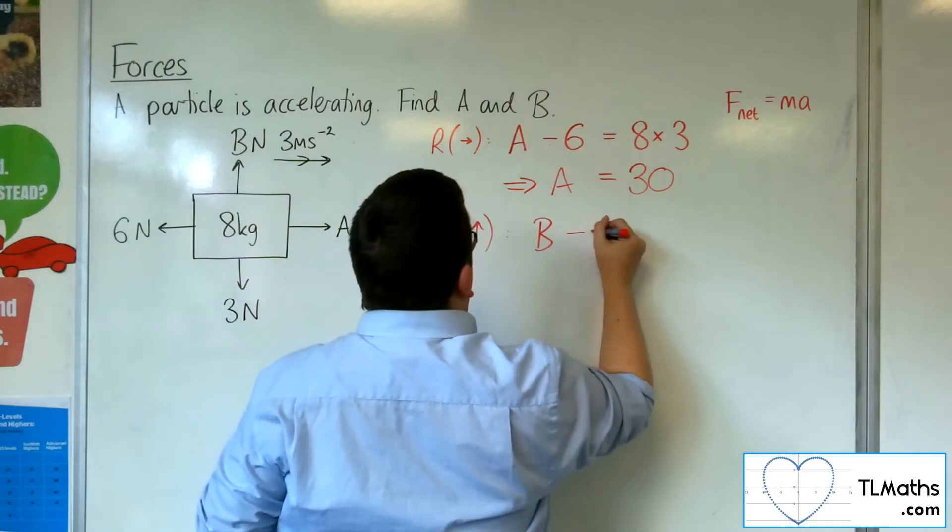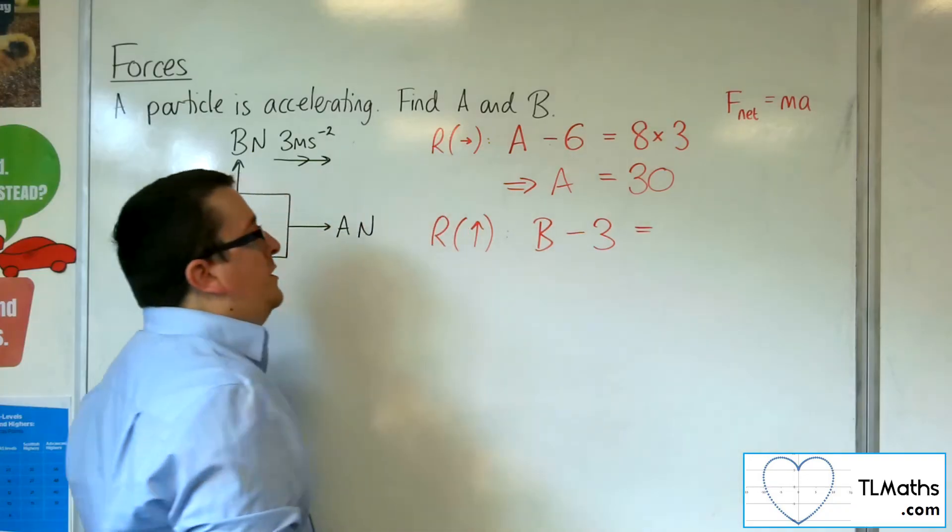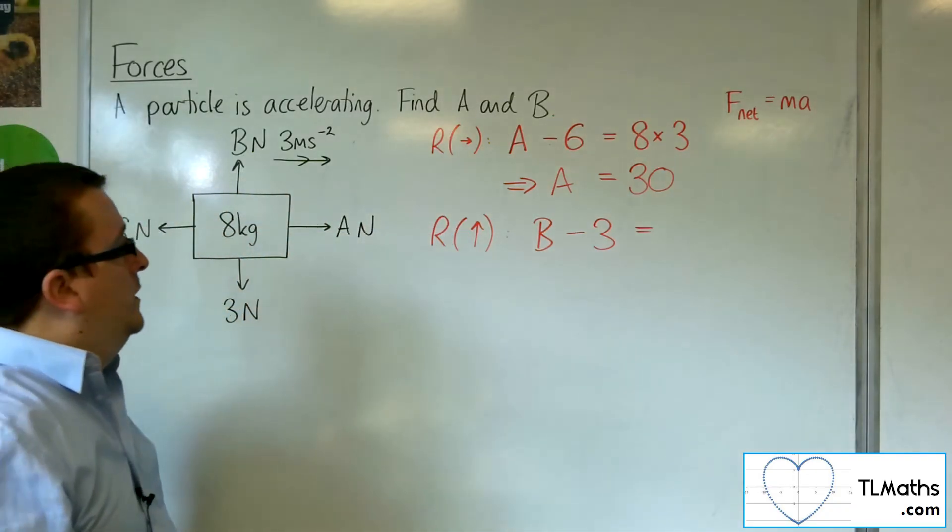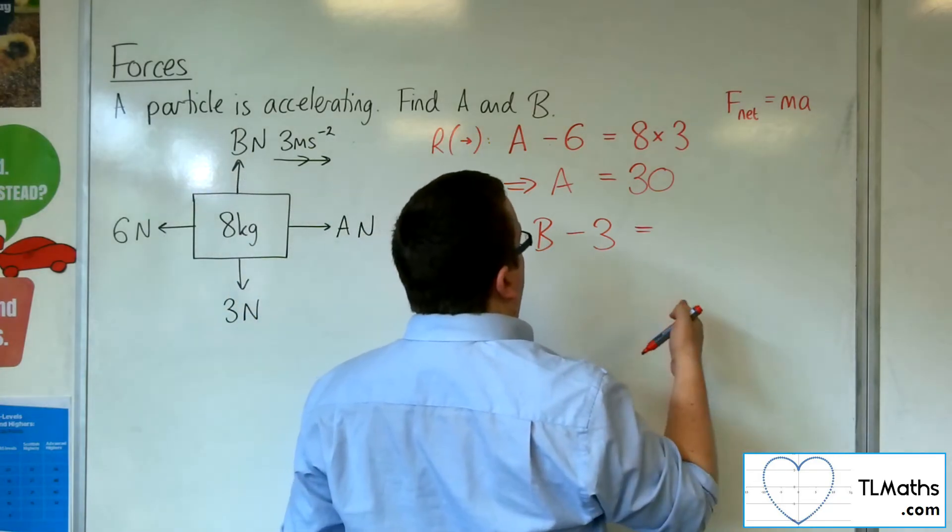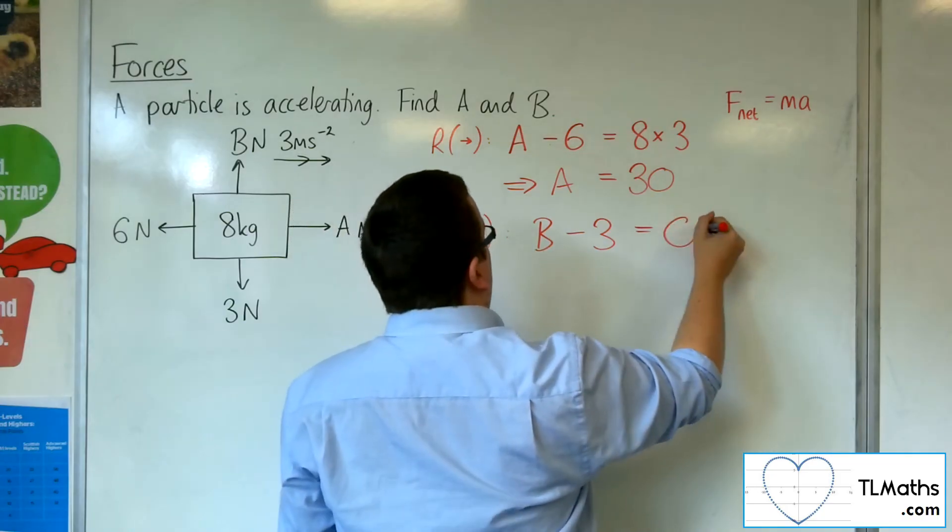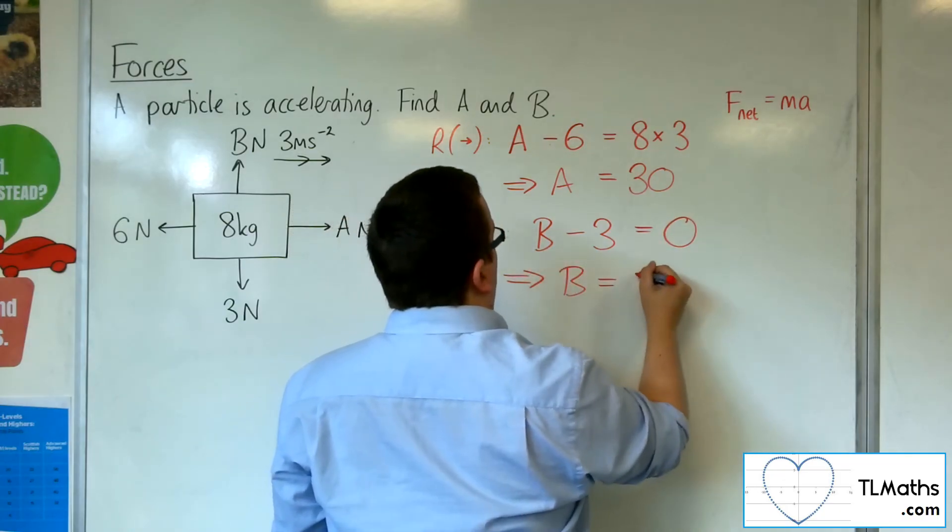We've got 3 working against the block. And because the particle is not accelerating in the vertical direction, that means we've got mass times 0. There's 0 acceleration in the vertical direction, so we just have 0. And so B must be 3.